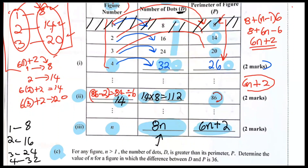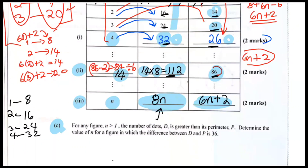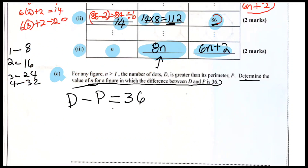They're saying the second column d is greater than the third column p for everyone — ignore the first figure. Let's check: 16 > 14, 24 > 20, 32 > 26, 112 > 86. The second column is always bigger than the respective third. No problem there. The question says: determine the value of n for a figure in which the difference between d and p is 36. d is represented by 8n, and p is represented by 6n + 2.